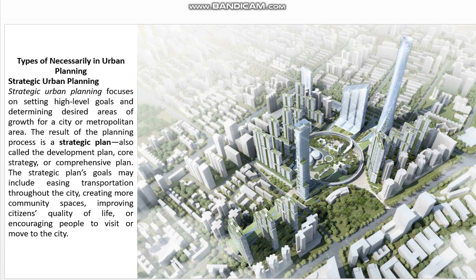First, strategic urban planning: strategic urban planning focuses on setting high-level goals and determining desired areas of growth for a city or metropolitan area. The result of the planning process is a strategic plan, also called the development plan, core strategy, or comprehensive plan. The strategic plan's goals may include easing transportation throughout the city, creating more community spaces, and improving citizens' quality of life.